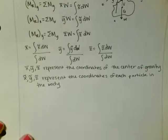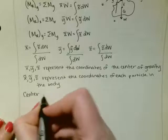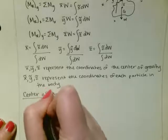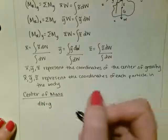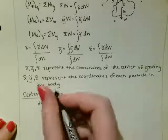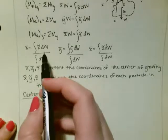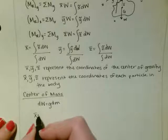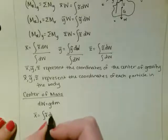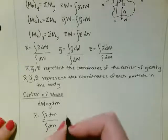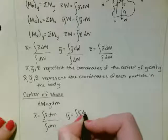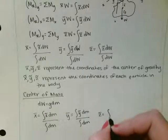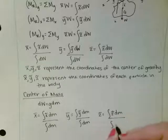So what if we wanted the center of mass of a body? Well, dw would be equal to the gravitational constant g times the differential mass dm. So we can substitute each of these equal to g·dm, and then the g's are going to cancel on the top and bottom, such that x̄ equals the integral of x̃ dm divided by the integral of dm, ȳ equals the integral of ỹ dm divided by the integral of dm, and z̄ equals the integral of z̃ dm divided by the integral of dm.